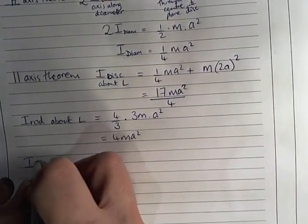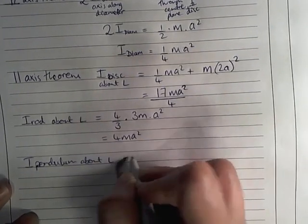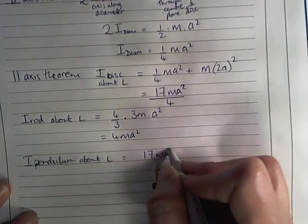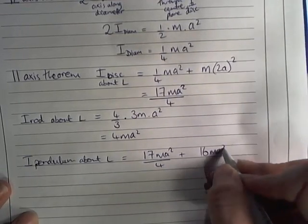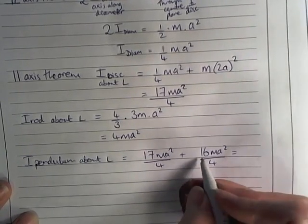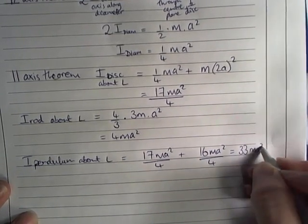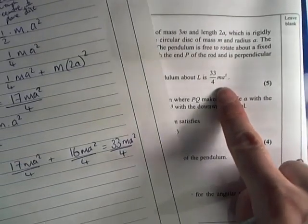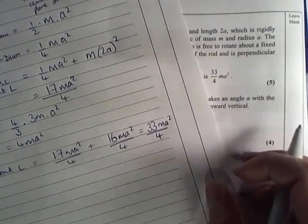Finally, the moment of inertia of the whole pendulum about L is those two things added up. So I've got 17 ma squared over 4 plus 16 ma squared over 4, which makes 33 ma squared over 4. That part of the question is worth five marks.